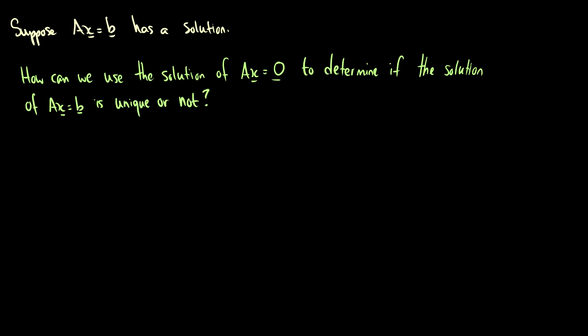So here's a question. Suppose we have a non-homogeneous equation, ax equals b, and it has a solution. How do we use the solution of ax equals zero to determine if the solution of ax equals b is unique or not? So is there one solution, or are there multiple solutions?